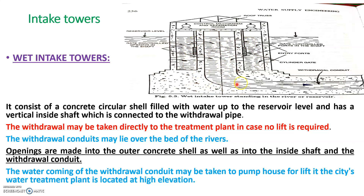In a dry intake structure, there is absolutely no presence of water inside the structure. Generally the wet intake structure is a shell of concrete or reinforced steel, constructed up to the reservoir level. It has a vertical shaft where the water conduit is drawn, and it is connected directly to the conduit pipes. Inside the concrete shell there are openings, and there is a shaft which regulates the flow of water. These conduits take the water directly to the treatment unit.